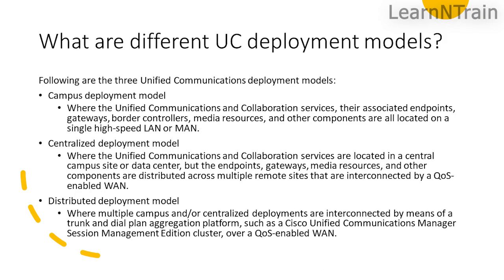What are the different deployment models? Following are the three unified communications deployment models. Campus deployment model: where the unified communications and collaboration services, their associated endpoints, gateways, border controllers, media resources, and other components are all located on a single high-speed LAN or MAN. Centralized deployment model: where the unified communications and collaboration services are located in a central campus site or data center, but the endpoints, gateways, media resources, and other components are distributed across multiple remote sites interconnected by a QoS-enabled WAN. Distributed deployment model: where multiple campus and/or centralized deployments are interconnected by means of a trunk and dial plan aggregation platform, such as a Cisco Unified Communications Manager Session Management Edition cluster, over a QoS-enabled WAN.